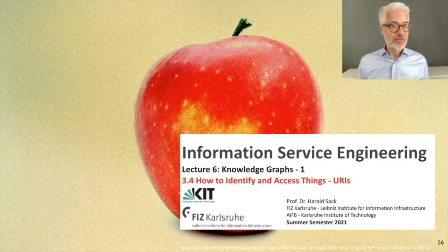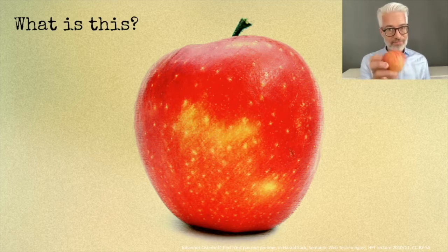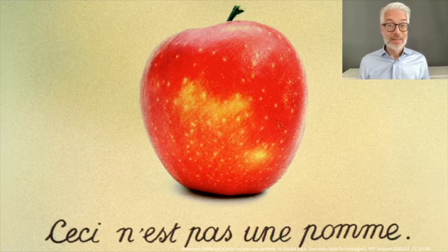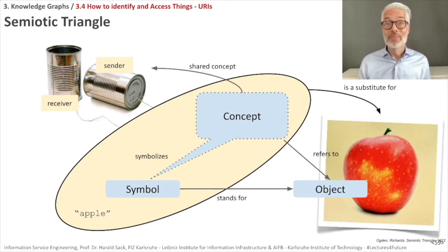In this last section of the first Knowledge Graph lecture, we will talk about how to identify and access things on the semantic web and the web of data. We do this with the help of URIs. Before we start, let's do a little experiment. What is this? Most likely you will say this is an apple. If this is a real apple, then this of course is not an apple — it's a picture of an apple. However, we took it as an apple, and this is really a nice feature of our brain. We can take a referent, a substitute, and treat it like the real thing. And this is also something that language does for us.